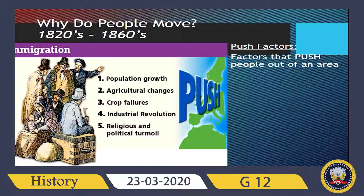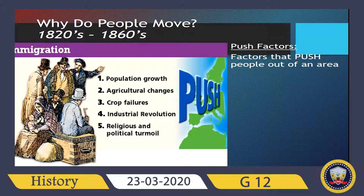Crop failures — for example, famine or lack of water and natural sources for growing food — pushed people to emigrate. The fifth reason was religious and political problems. America had the Bill of Rights, stating that no one can be imprisoned or punished for having a different religion — everybody is free to choose their own religion. Politically, the government had no right to imprison or question citizens for having different views.